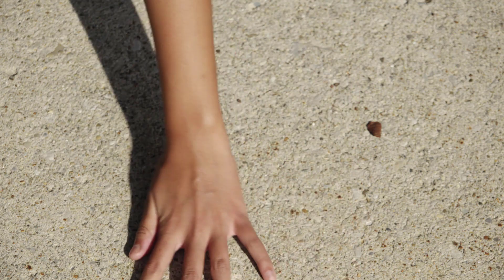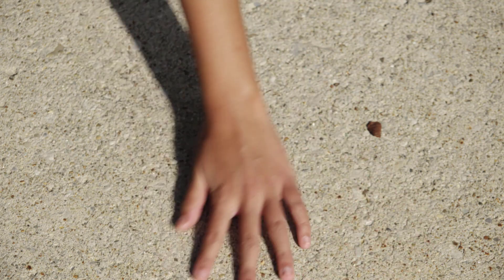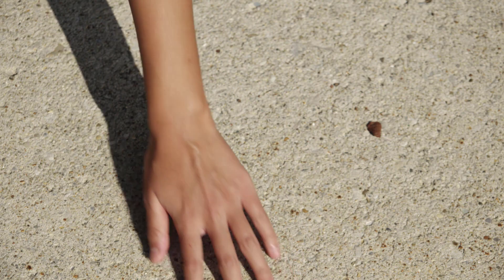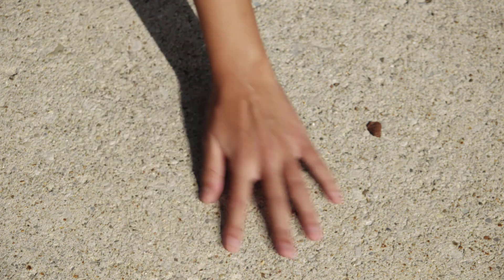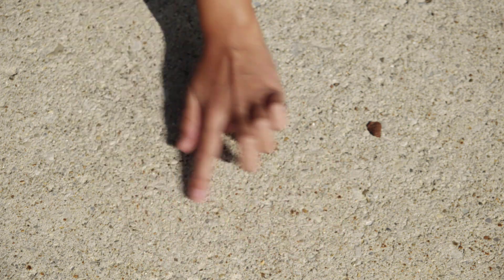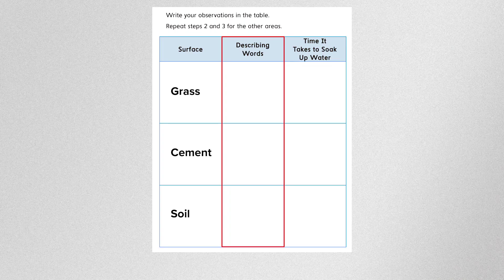Next, let's move on to the cement surface. First, make some observations about this area. What does the surface look like? How would you describe the hardness of the cement? How would you describe the color and texture of the cement? Record some describing words in your data table. When you're ready, select Continue.